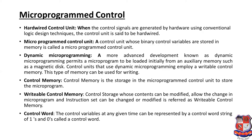The first unit is the hardwired control unit — when control signals are generated by hardware using conventional logic design techniques, that control unit is said to be hardwired. The second is the micro program control unit — a control unit whose binary control variables are stored in memory is called a micro program control unit.